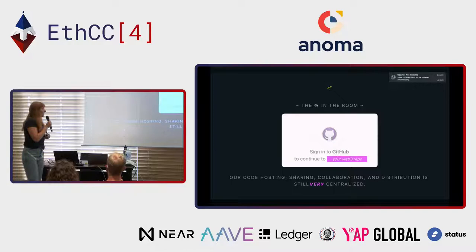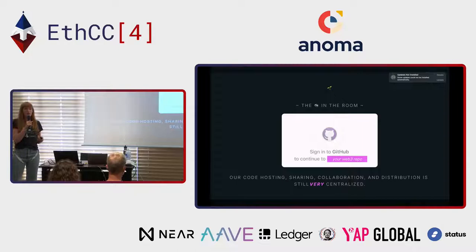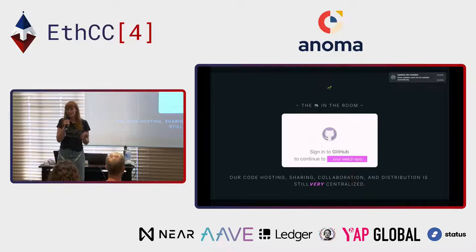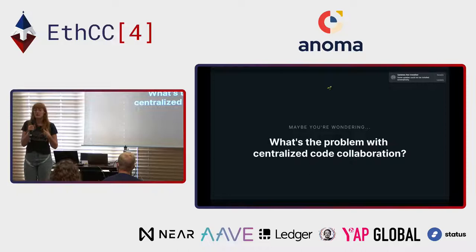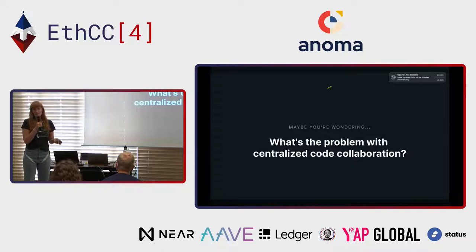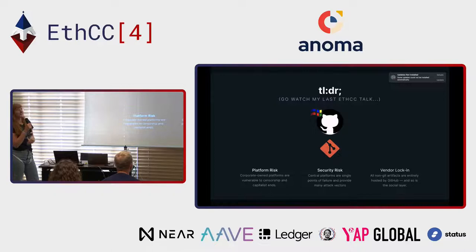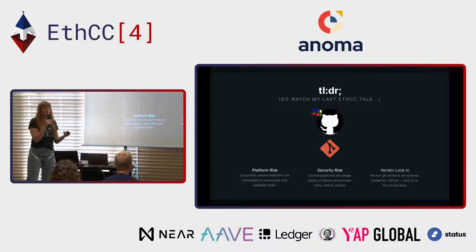But at Radical we think there's an elephant in the room: as we're building towards this decentralized web, our code sharing, hosting, collaboration, and the distribution of the code that makes up Web3 is actually very centralized — inherently centralized. You have to sign in to GitHub to access your Web3 code. A lot of people ask: what's the problem with centralized code collaboration? We use GitHub every day. GitHub is an example of a centralized forge and it works really well. But the problem is actually systemic and has so much more ideological color.